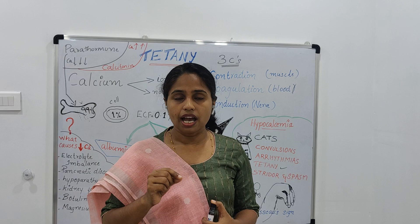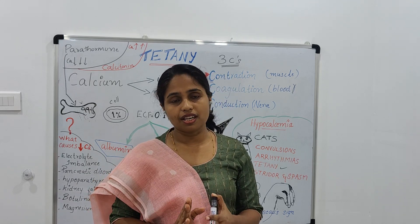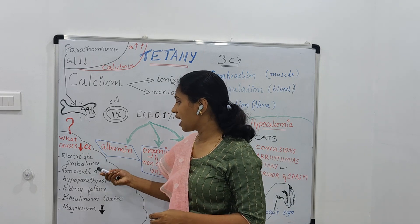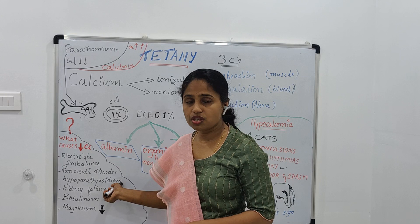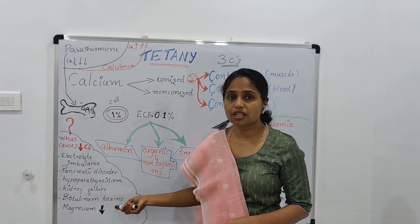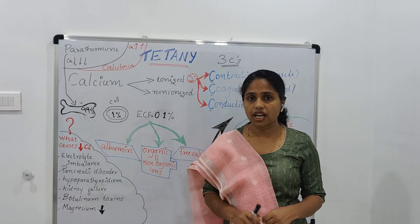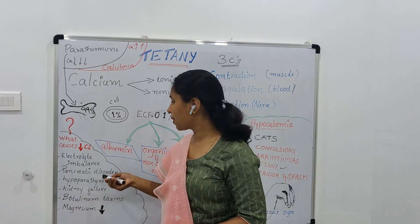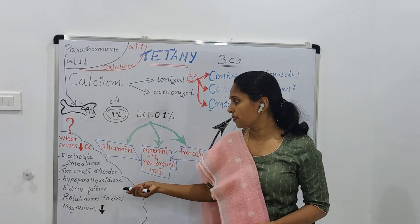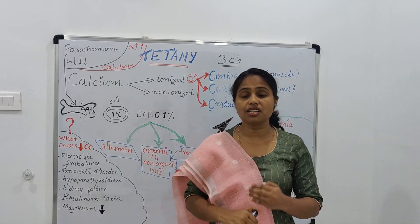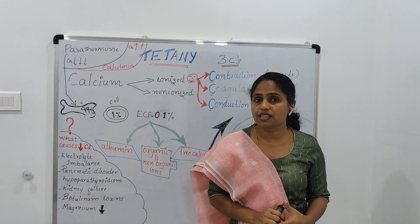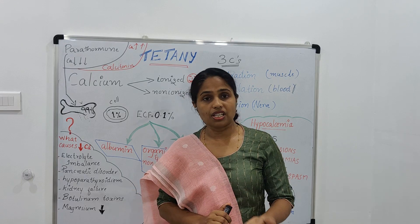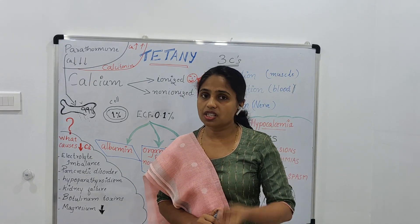The signs of hypocalcemia are considered lethal complicatory signs, so you must identify them in advance and treat. The causes include electrolyte imbalance, pancreatic disorders, hypoparathyroidism, renal failure, and decreased magnesium levels. Electrolyte imbalance alters calcium level; pancreatic disorders reduce calcium absorption; hypoparathyroidism decreases parathormone production; and kidney failure decreases parathormone activation.